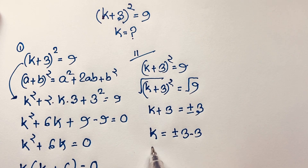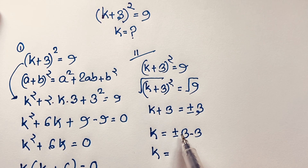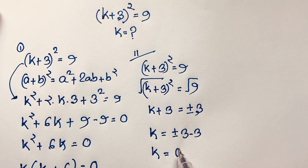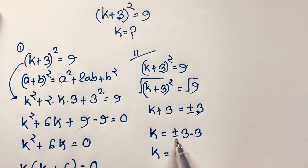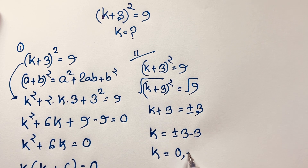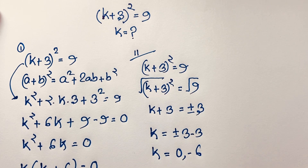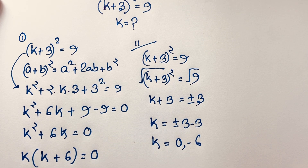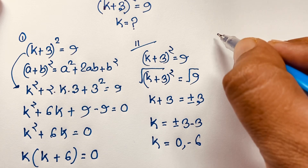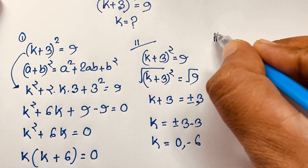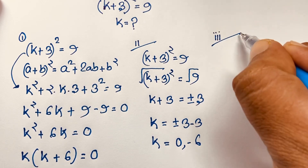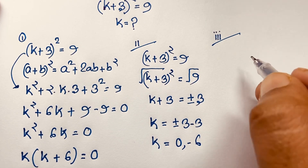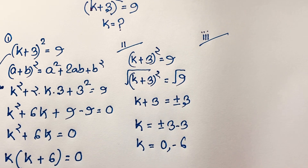So k = ±3 − 3. If I take the positive case: 3 − 3 = 0. If I take the negative case: −3 − 3 = −6. So we find our final answer: k = 0 or k = −6.